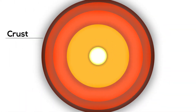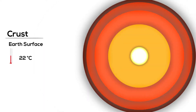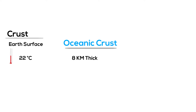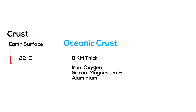The crust is the Earth's surface. It's about 22 degrees Celsius. There are two types of crust. Oceanic crust, which is 8 kilometers thick and made up of iron, oxygen, silicon, magnesium, and aluminum.